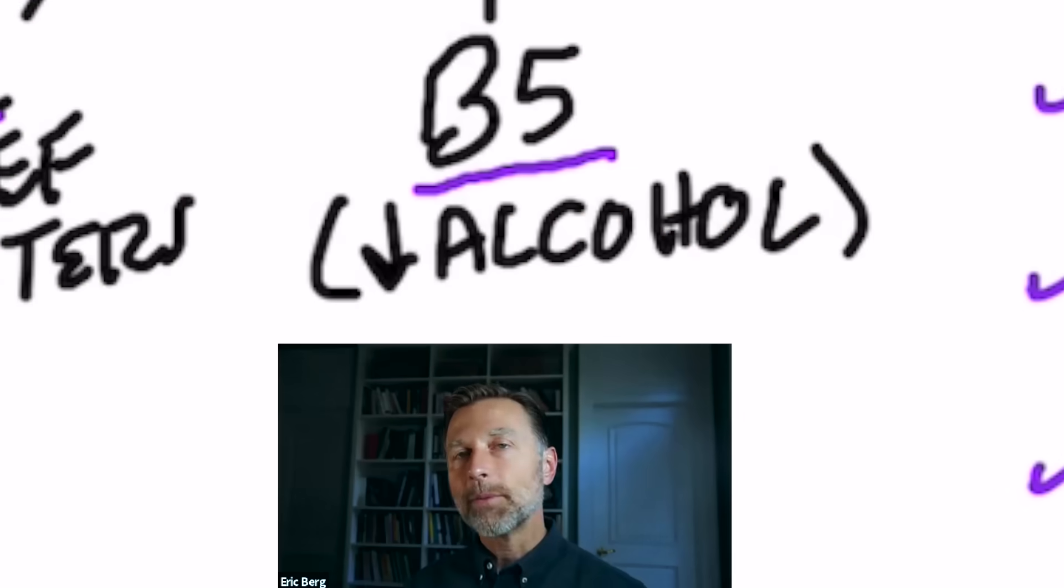One of the most common ways that someone becomes deficient of B5 is from drinking alcohol. So if someone is drinking alcohol, even several times a week, they're usually going to be deficient in B5, which can indirectly affect that acetylcholine.